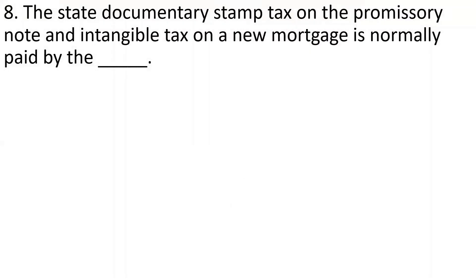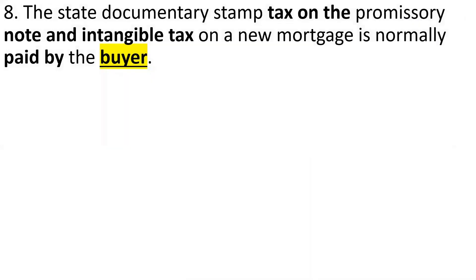Number eight: The state documentary stamp tax on the promissory note and intangible tax on a new mortgage are normally paid by the buyer. The buyer pays taxes for the loan — that's the promissory note. Intangible tax is paid on new loans only, whereas the documentary stamp on the promissory note applies to both new and assumed loans. The buyer pays both.